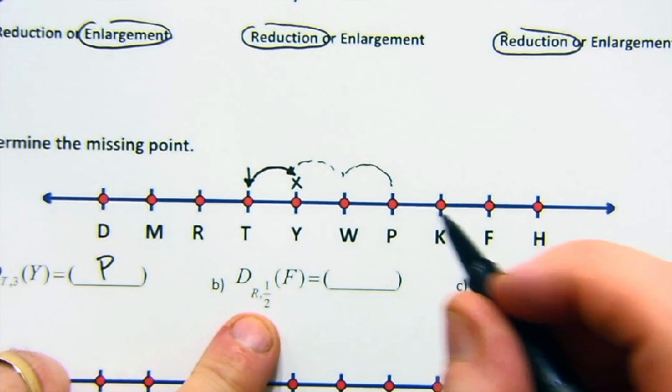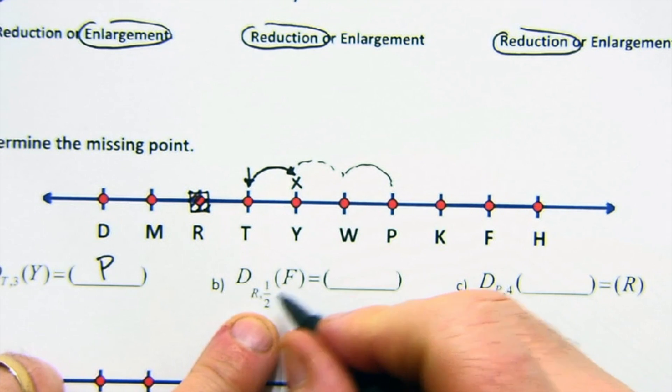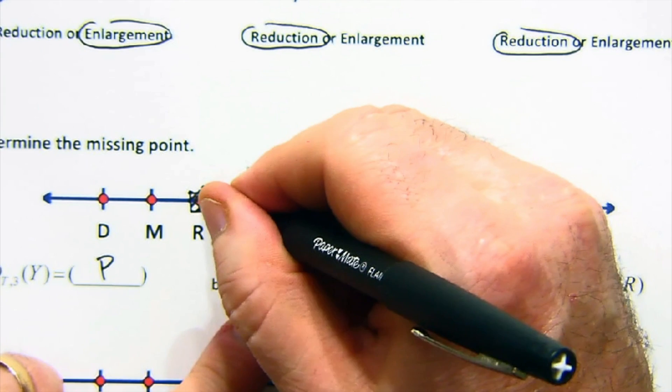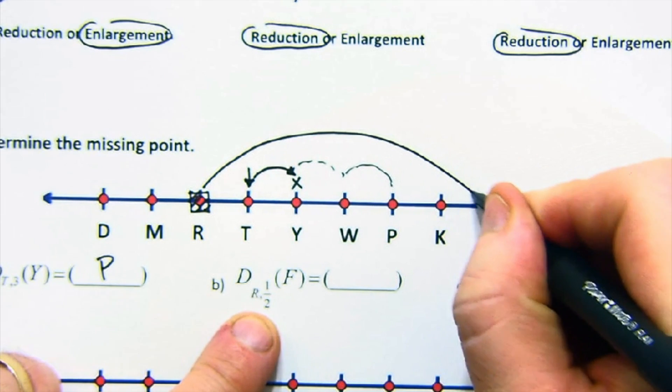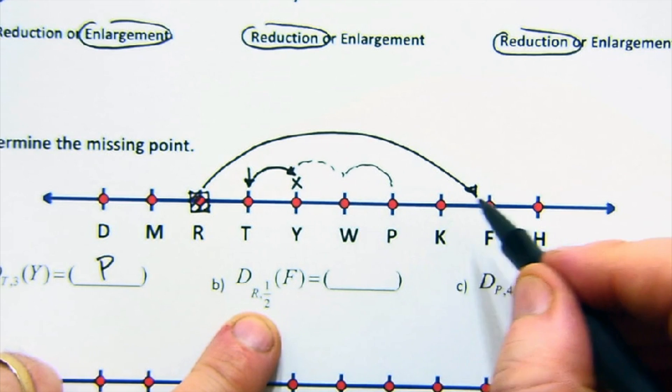Here, if we're centered at R now, so I'm going to just notate we're centered at R. And we're looking at F. So F is way over here, which is one, two, three, four, five, six away.